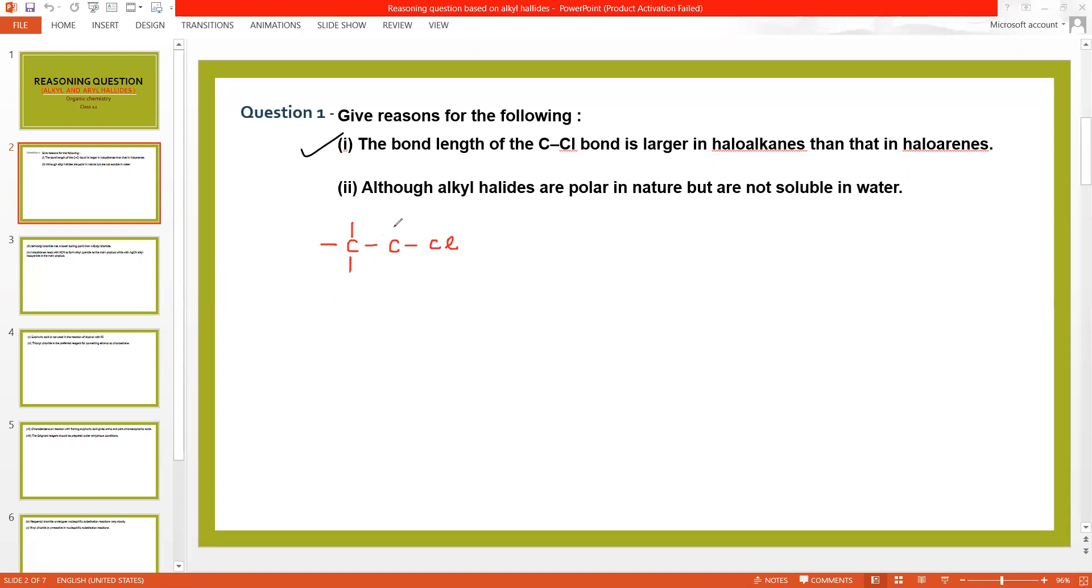But in case of haloarene, halogen group is directly attached to benzene ring. This is chlorobenzene. Here you can see that chlorine atom is directly attached to singly bonded carbon which is sp3 hybridized, while in chlorobenzene chlorine is attached to sp2 hybridized carbon which is quite shorter.